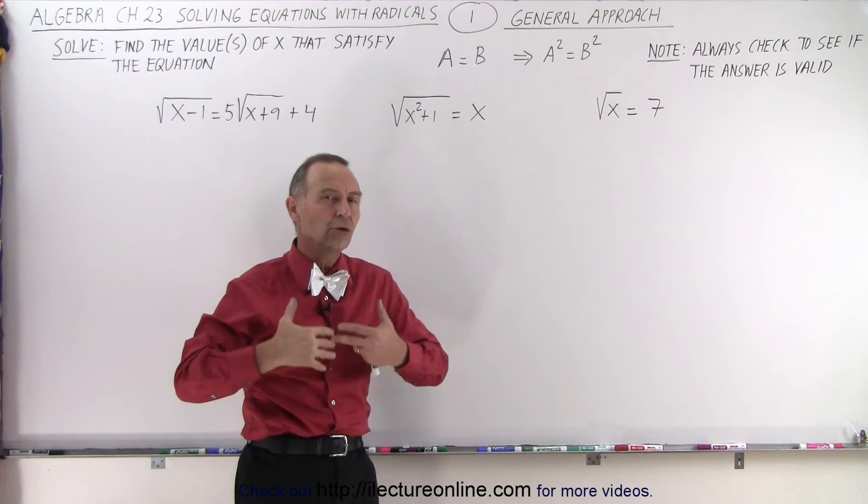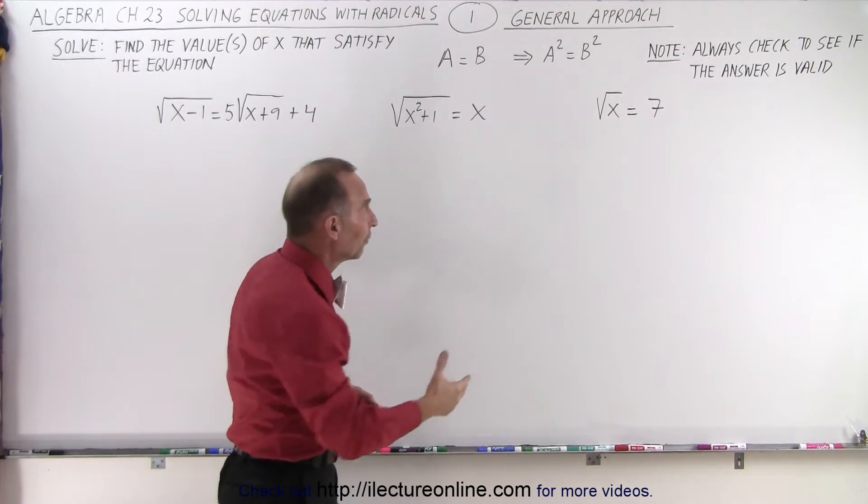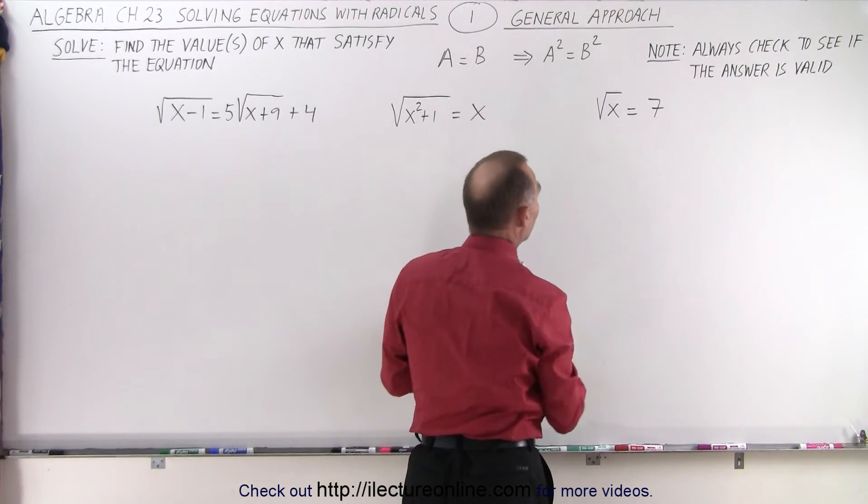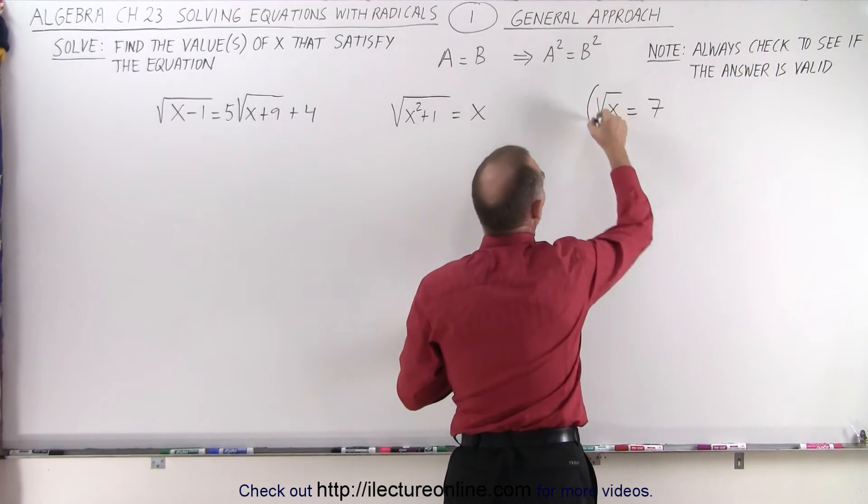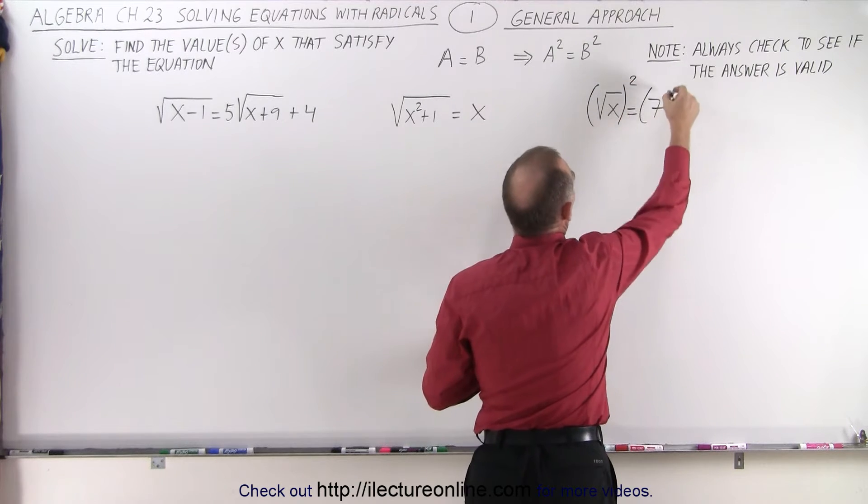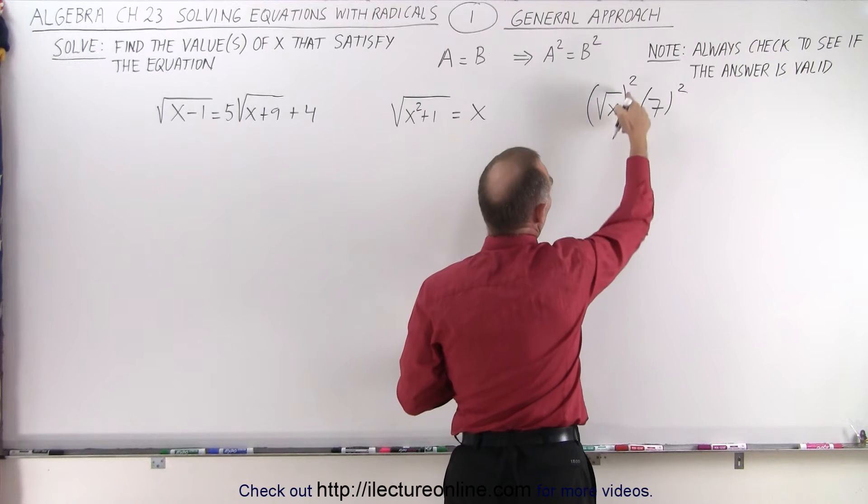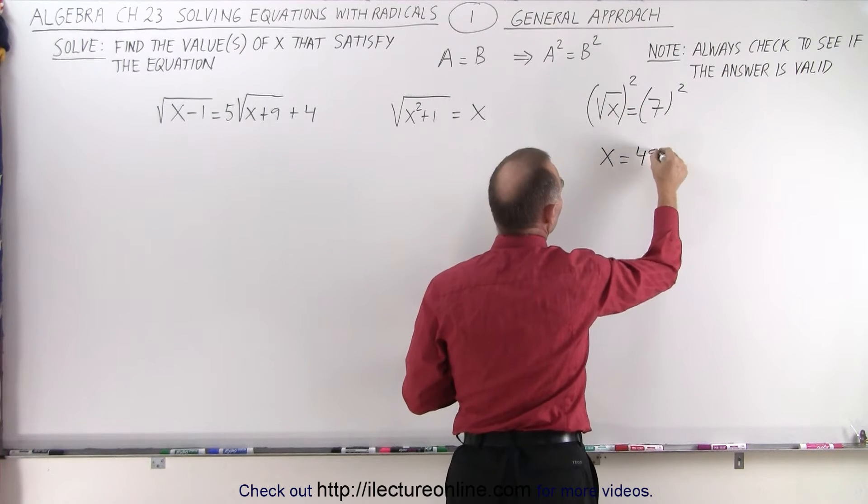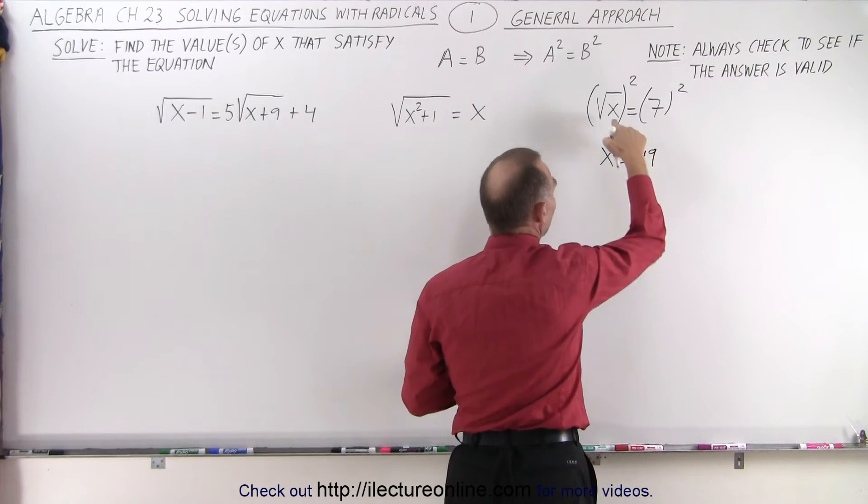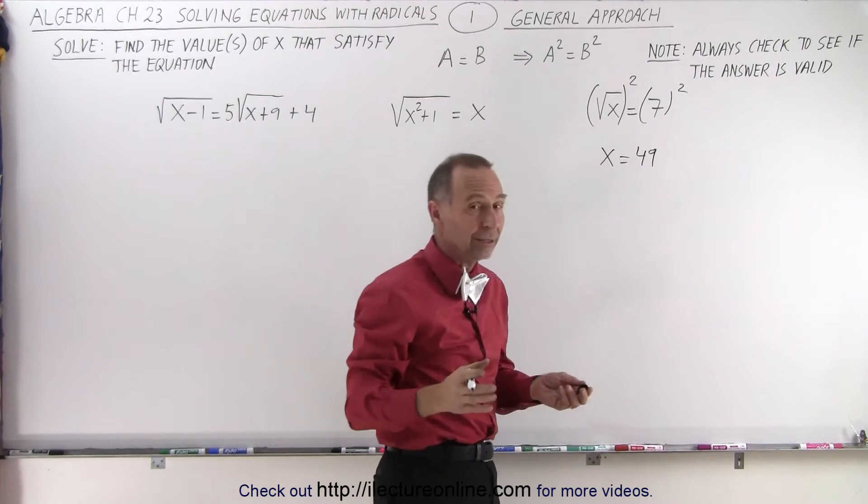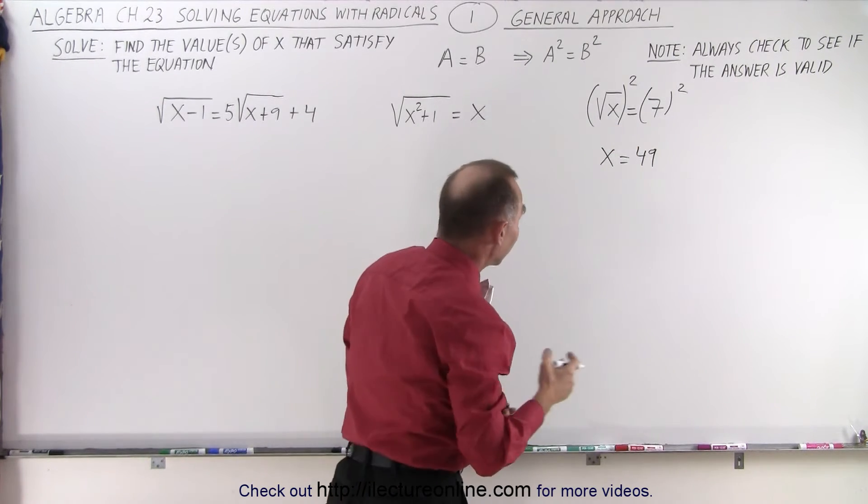Here we're going to show you the general approach. For something like this, it's straightforward. We're simply going to square both sides - square the left side and square the right side. This becomes √x squared is simply x equals 49. When we plug that 49 back in the original equation, we should get the correct valid answer.